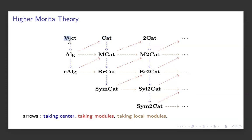The blue arrows going downward mean taking centers, or at the level of vector spaces and categories, taking endomorphisms. Endomorphisms form an algebra. Taking the center of an algebra gives a commutative algebra. Similarly, endomorphism functors of a category form a monoidal category by composition. And for a monoidal category, there is a notion called the Drinfeld center, which produces a braided category. These constructions generalize to two-categories as well, and we will see later how they are defined rigorously.